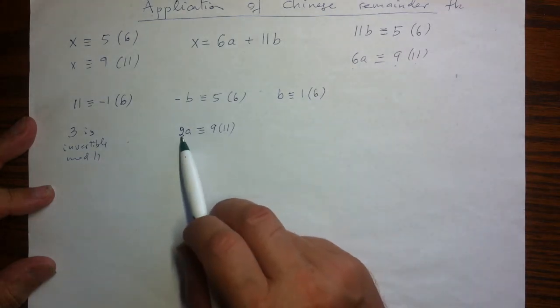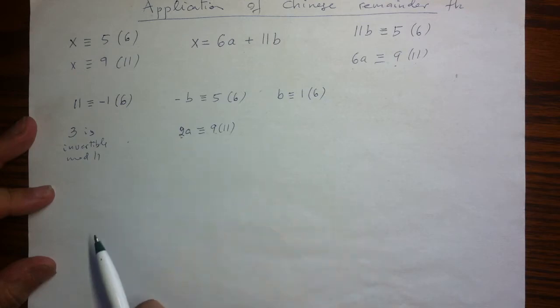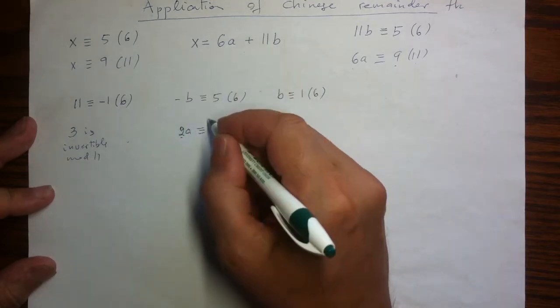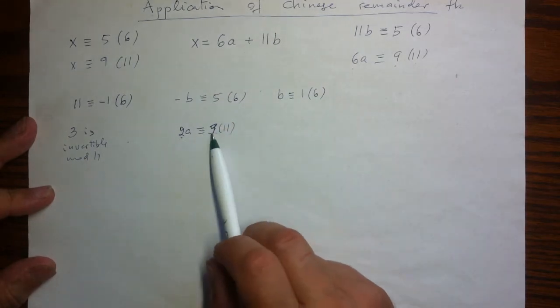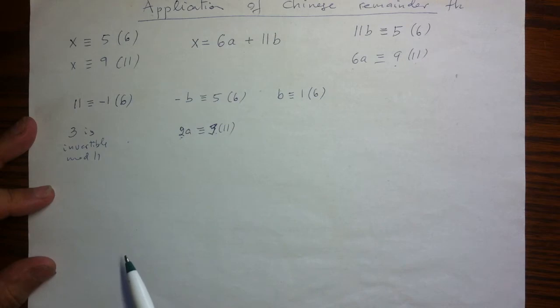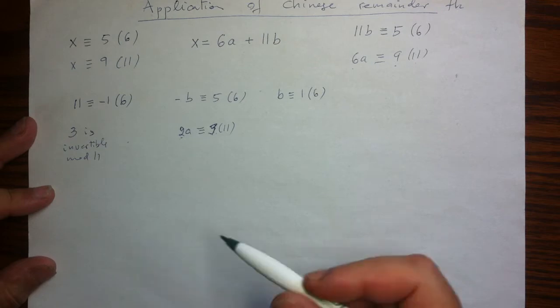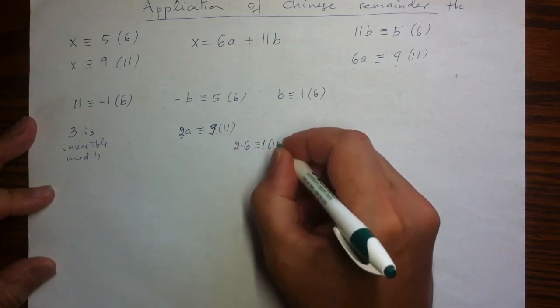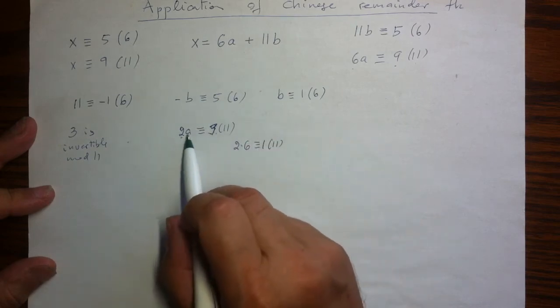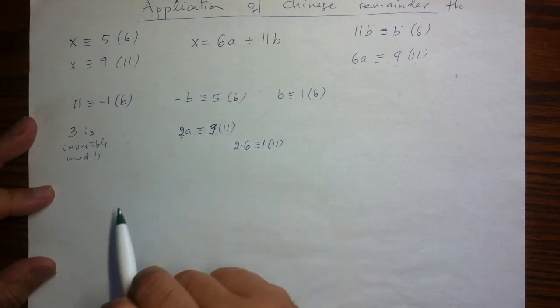And here I have to invert 2. So I need to find the inverse of 2 and multiply both sides by... Sorry, that's supposed to be 3 on the other side. Multiply by the inverse of 2 mod 11. And the inverse of 2 is going to be 6. Because 2 times 6 is going to be 12, which is 1 mod 11.